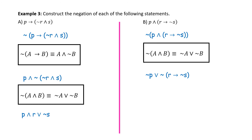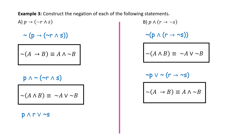For the second part, the negation of if R then not S: we use the definition that the negation of if A then B is A and not B. Applying that gives us not P or R and not not S. Simplifying the double negation, we finally have not P or R and S.